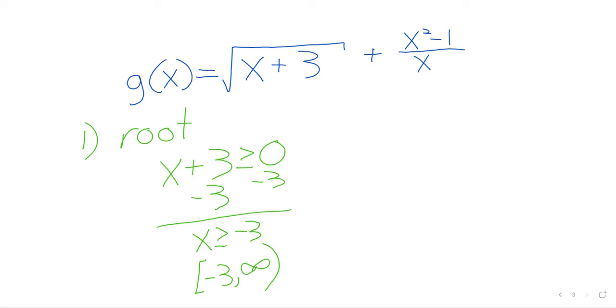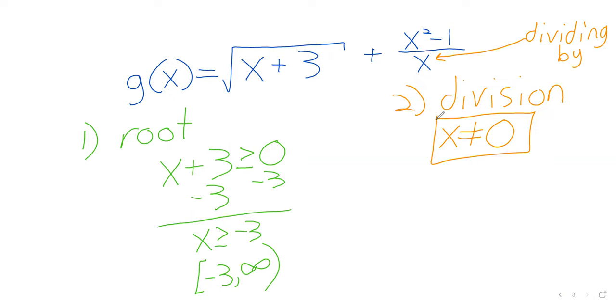But we're not done yet. What about division? Well, we can't divide by 0. We are dividing by x, ergo x cannot be 0. So, we've got two pieces of information. We've got that inequality. And then we've got that interval. And all that remains is to put this information together.